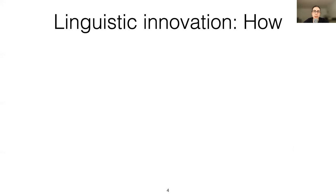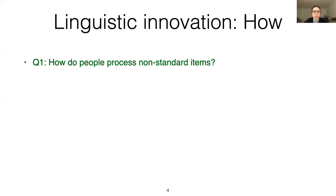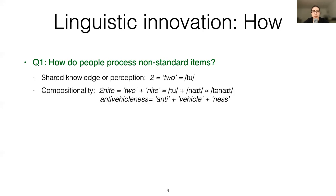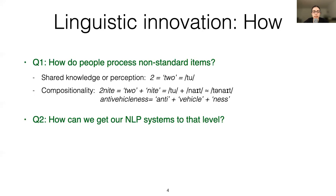There are two main research questions here. The first is: how do people infer the meaning of such non-standard items? To some extent, we rely on shared knowledge — like to understand the spelling of 'tonight' shown earlier, you'd need to know the pronunciation rules of English and that the digit two corresponds to the English word 'to'. But also, we use compositional reasoning — knowing how to combine the pronunciation of segments to figure out it sounds like 'tonight', or combining morpheme meanings to understand a complex derivation. The second question is: how can we get our NLP systems to that level of understanding?